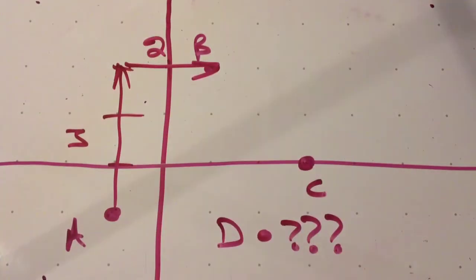Now, the way we do this is we're going to count from A to B. In this case, it's three units up and two units over, or three units in the Y direction and two in the X.